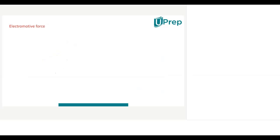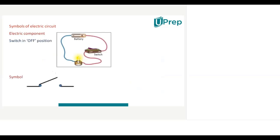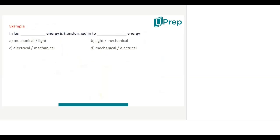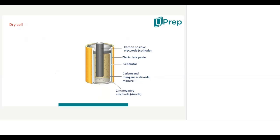Next we look at electromotive force, but first let me remind you about the battery. This is a dry cell. In a dry cell, there is a carbon positive electrode and a zinc negative electrode — a cathode and an anode. Apart from the cathode and anode, there is an electrolyte paste inside it. Generally, the electrolyte undergoes dissociation, and after dissociation, positive ions and negative ions are formed. To push those positive and negative ions, some force is required.